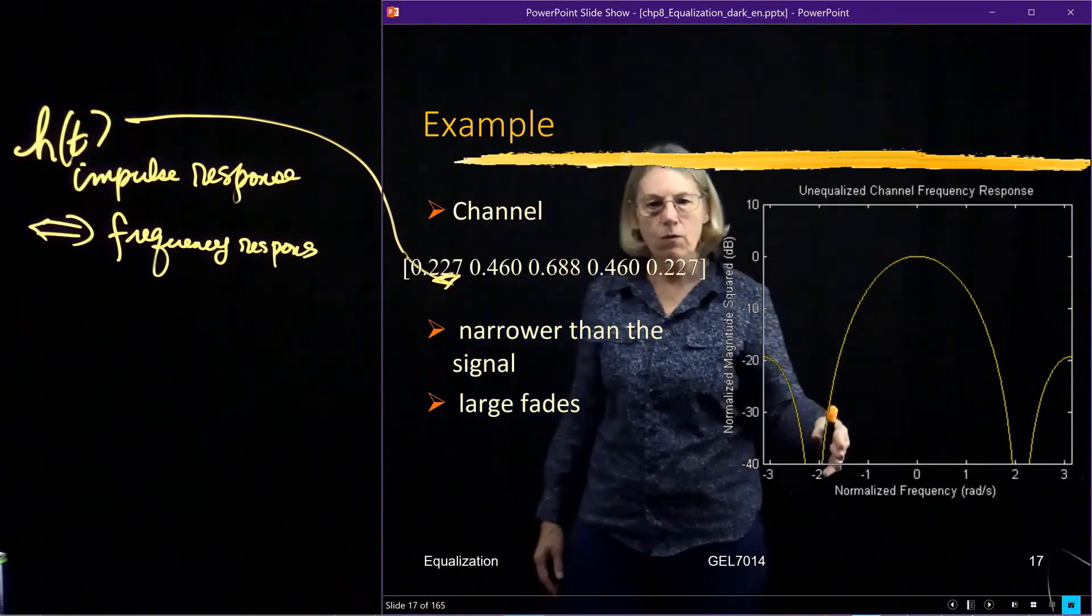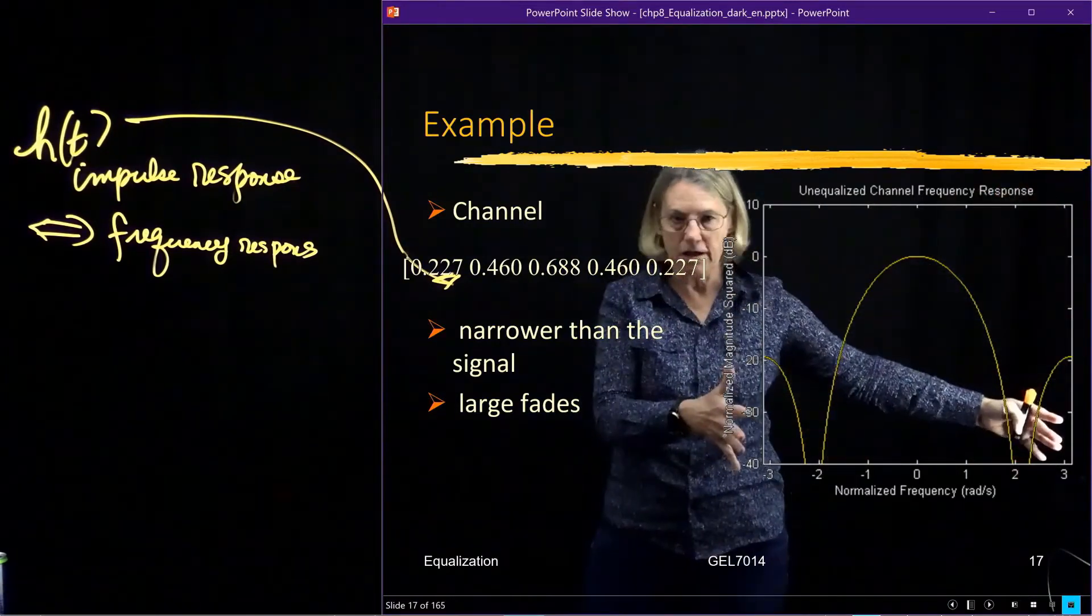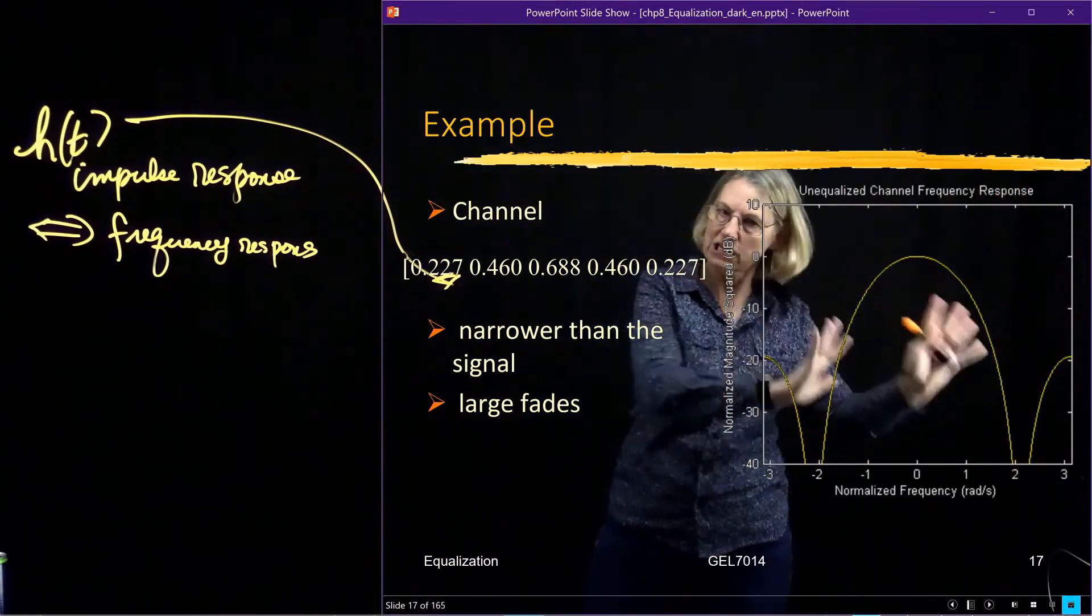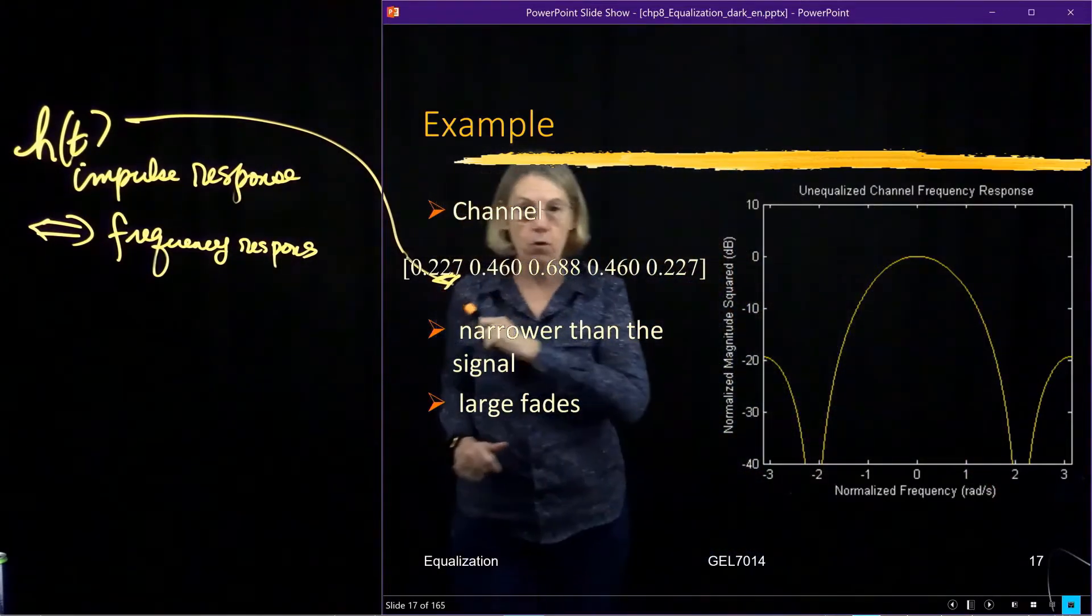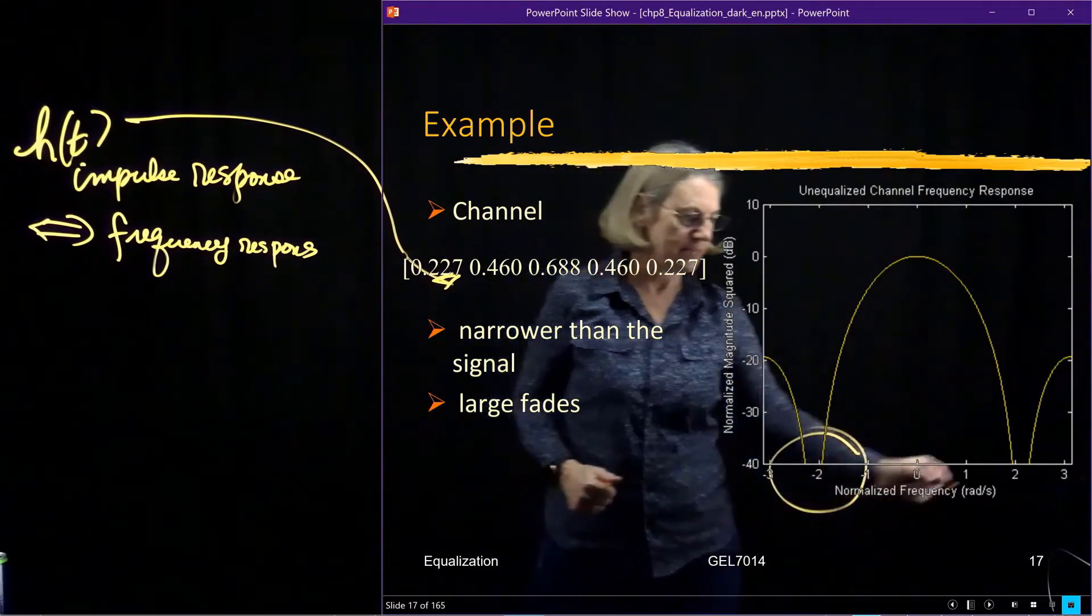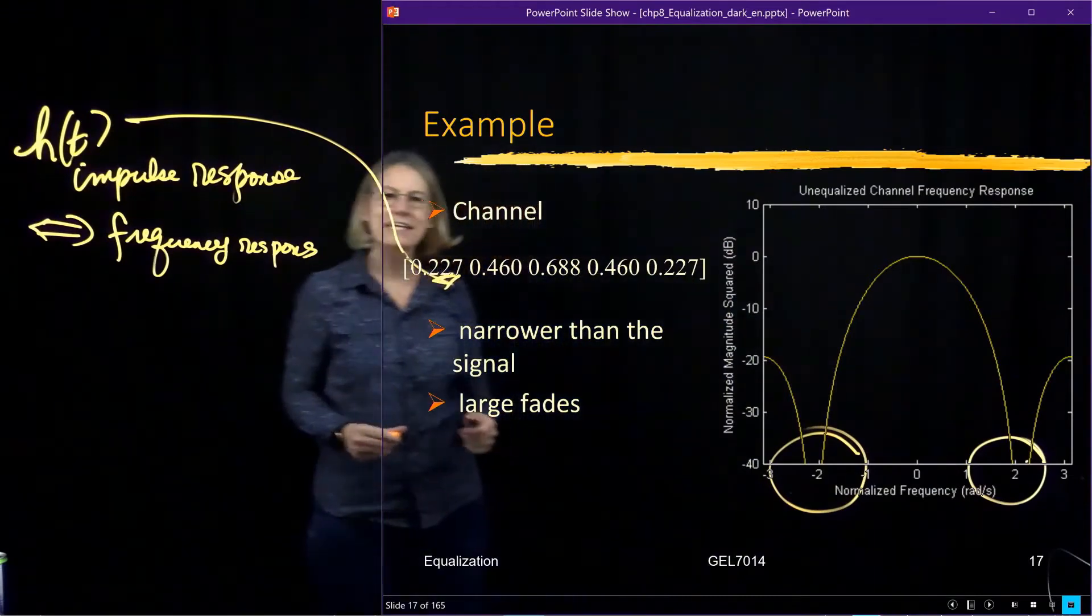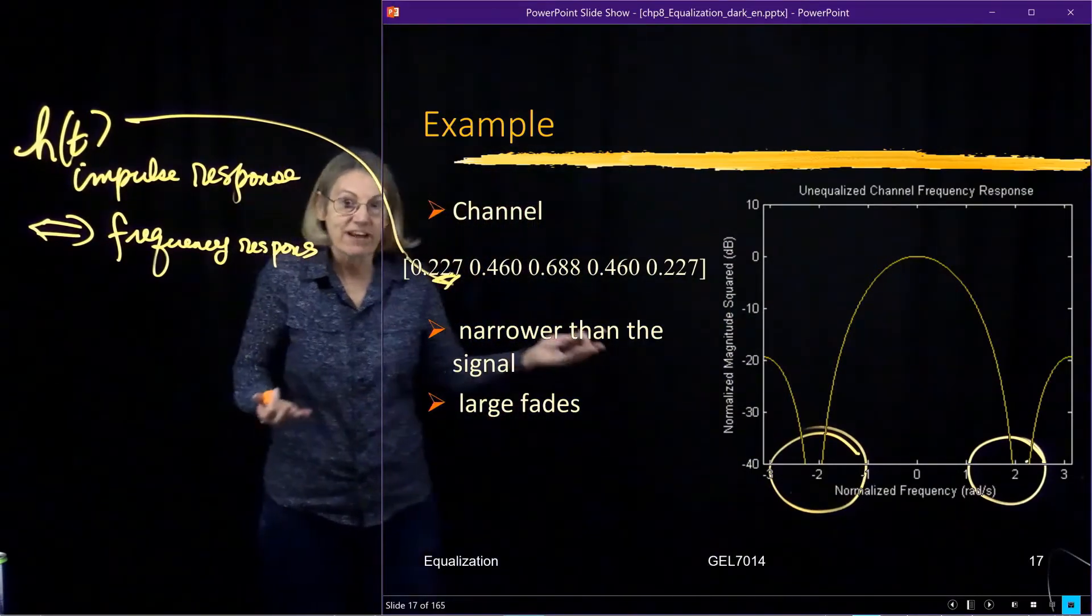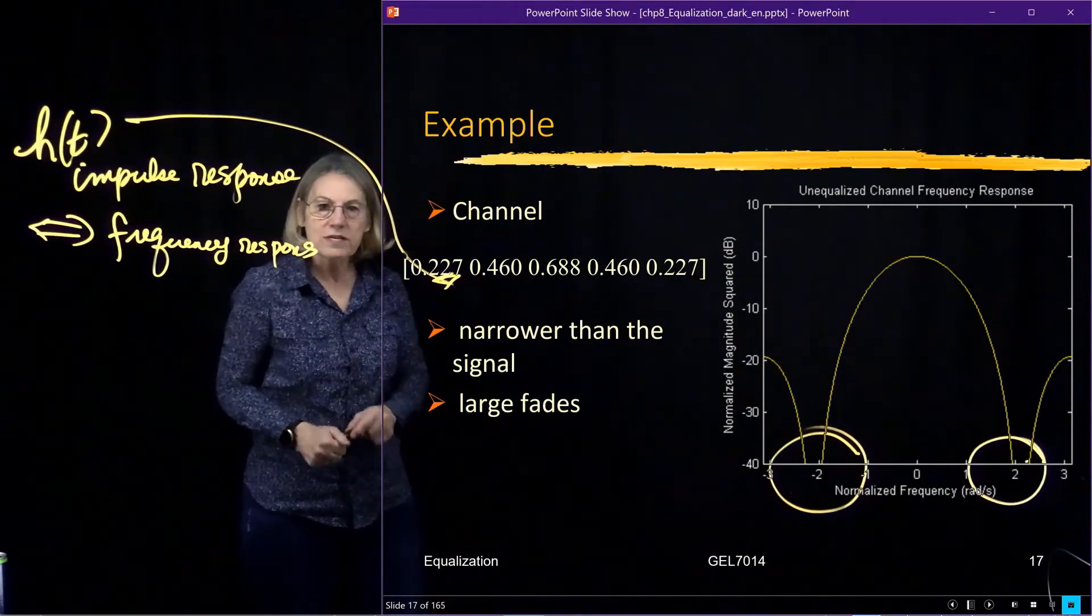Now, this scale that I've chosen for this frequency response is such that the signal sort of fills up this frequency range. This is the frequency band of the signal. This is the frequency response of the channel that I'm going to pass the signal through. And of course, this is narrower than the signal because this main lobe does not fill up the whole area. So the whole area is the signal I'm trying to push through, and this is something that's copying it. And even more important is that we have some really deep fades here where the channel is almost completely zeroing out. It effectively is zeroing out the signal.